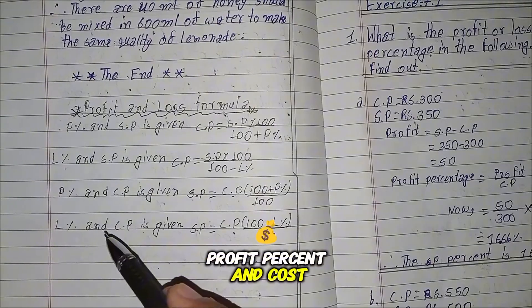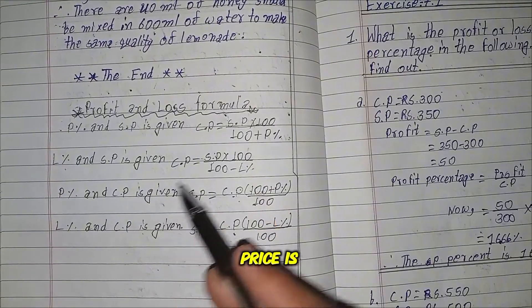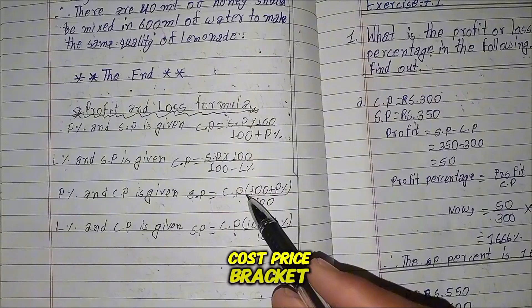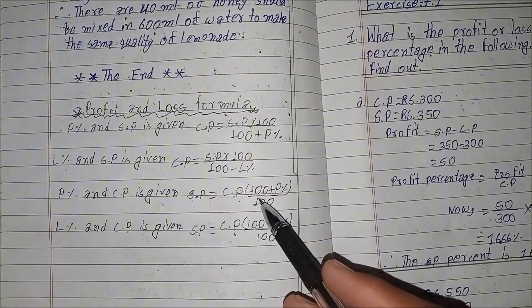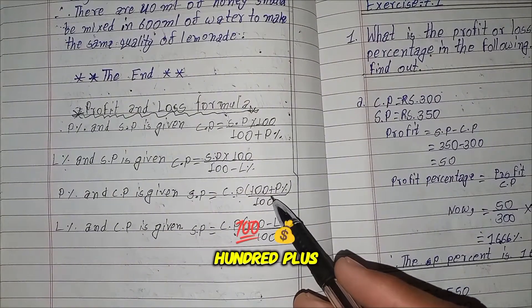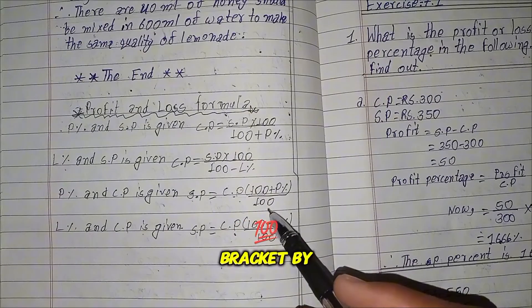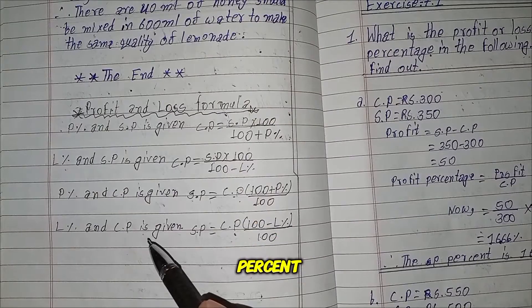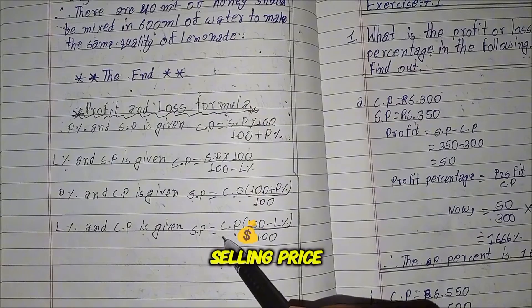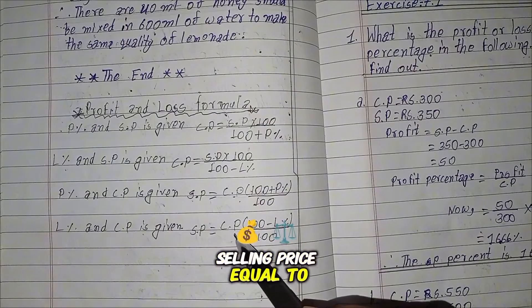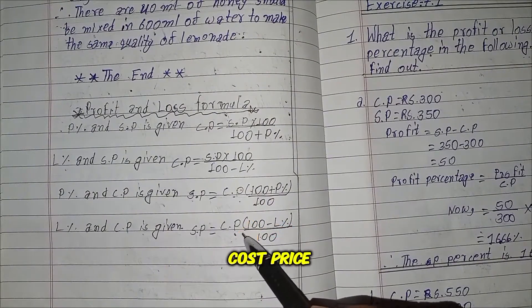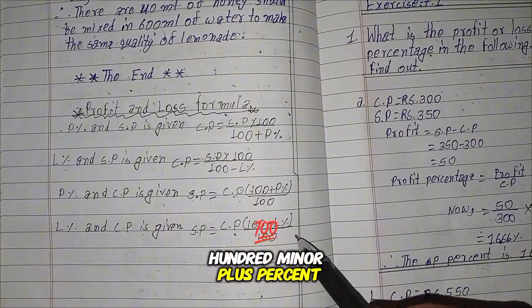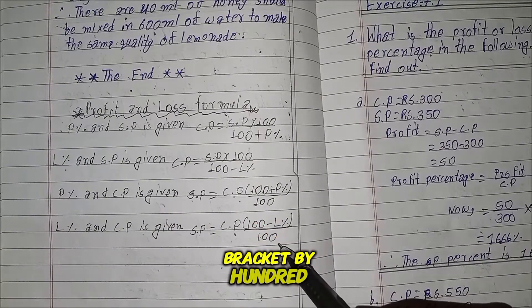When profit percent and cost price are given, selling price equals cost price multiplied by (100 plus profit percent), divided by 100. When loss percent and cost price are given, selling price equals cost price multiplied by (100 minus loss percent), divided by 100.